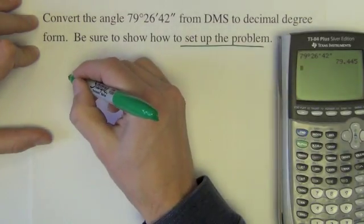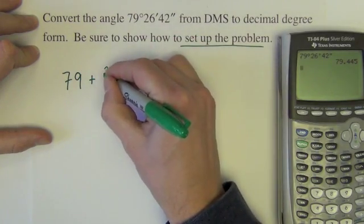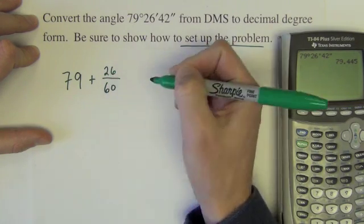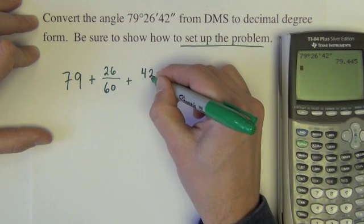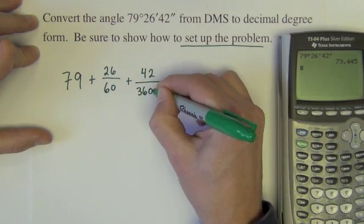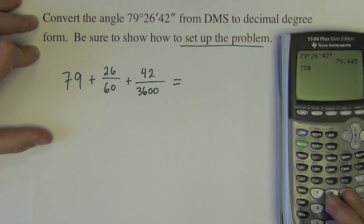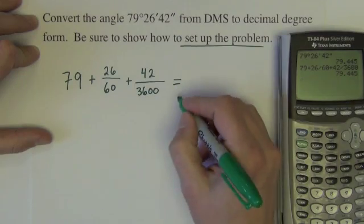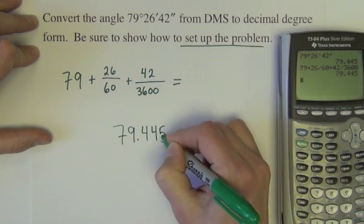Let's show how to do that to actually set up the problem. So we want 79 plus 26 minutes is the fraction 26 out of 60, 26 minutes out of 60 minutes, plus 42 seconds, 42 seconds out of 3600 seconds. And now if I just type that in: 79 plus 26 sixtieths plus 42 divided by 3600. And notice they're identical answers. So 79.445 degrees.